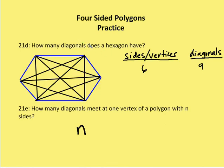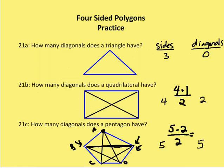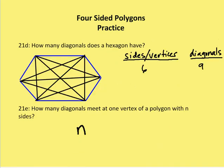How many diagonals does a hexagon have? A hexagon has nine diagonals. We apply the same system: six sides times three diagonals per side, divided by two, equals nine.